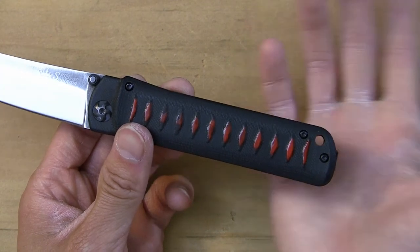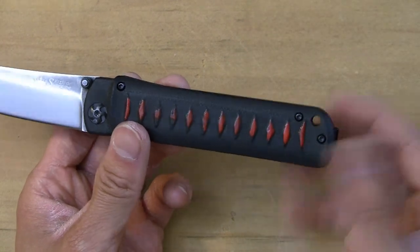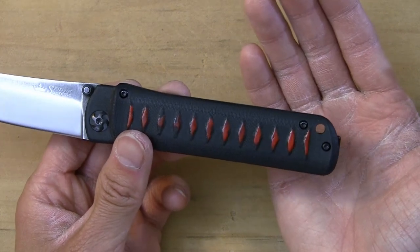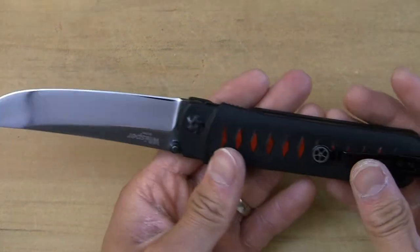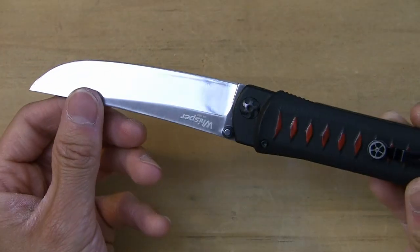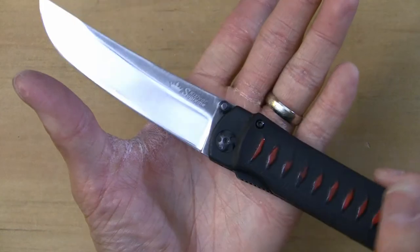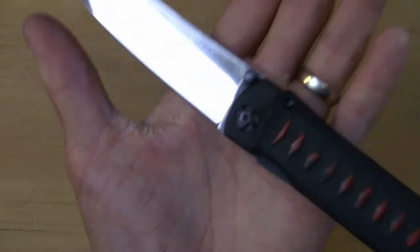So just be aware of that, it's not the largest lanyard hole out there. Got a decorative pivot as well, kind of like in a pinwheel design. Very interesting. Overall, deployment is very smooth and that has phosphor bronze washers in them.